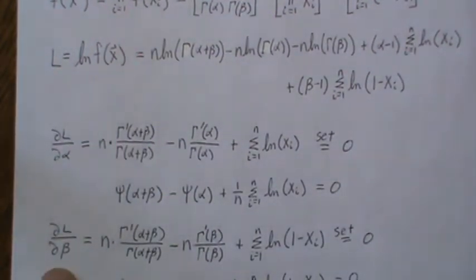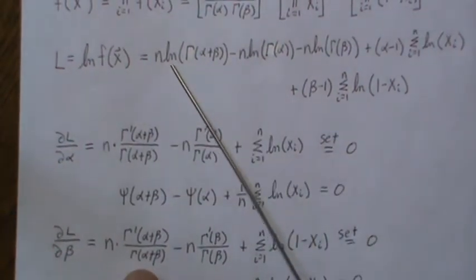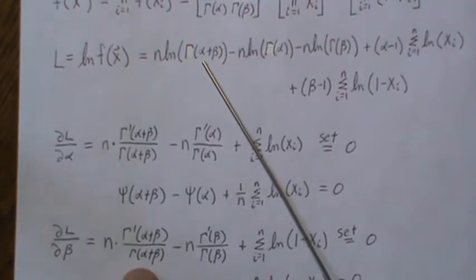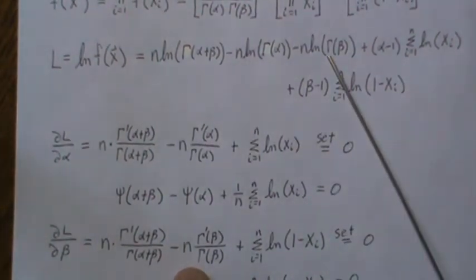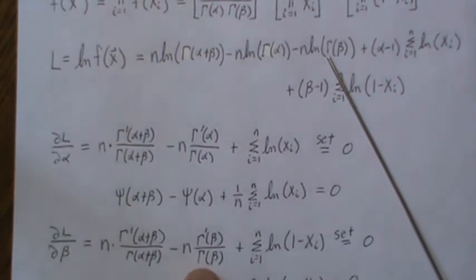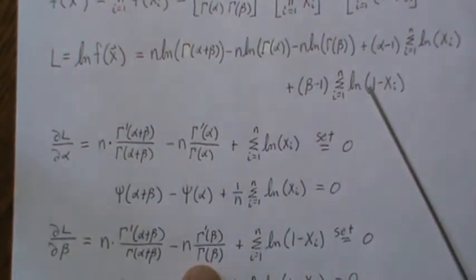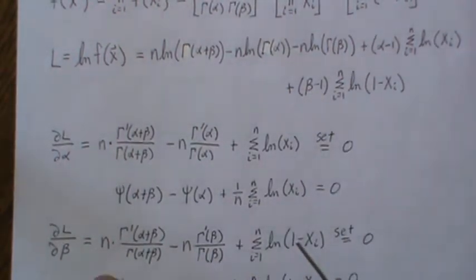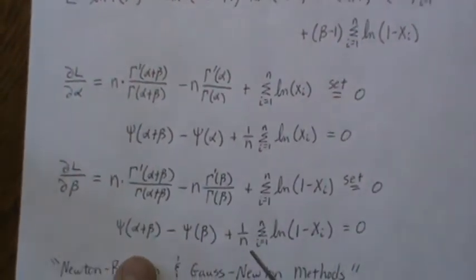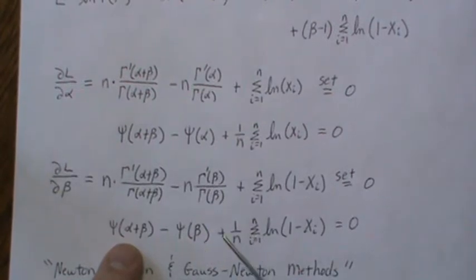Now if we take the partial derivative of L with respect to beta, we get the same thing, so it's n times 1 over this times a derivative of gamma, and we take this times beta, and we get that sum. Again, we divide by n everywhere, and that's what this is, and then this ratio is called a digamma function, so we get this.